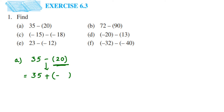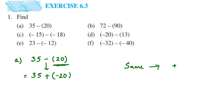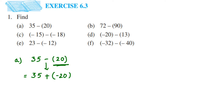Since 20 is a positive number, its additive inverse is minus 20. So the expression becomes 35 plus (minus 20). Now we follow the rule of addition. Since these two integers have different signs, we subtract the numbers. When adding two integers with the same sign — plus-plus or minus-minus — you add and keep the sign. When they have different signs, you subtract, and the sign of the result follows the greater number.